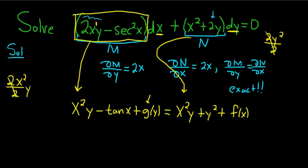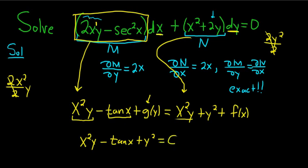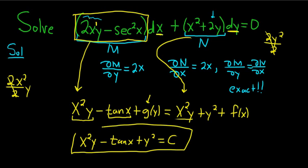Now you just use matching — you write down what you see only one time. Reading the left-hand side: x squared y, minus tan(x). We have both of these things, so you write them down. Then you look over here — you already have x squared y, so you don't write it again. But you're missing y squared, so plus y squared, and that equals c. And that's the answer — we've solved the exact differential equation using what I call the cheap method.